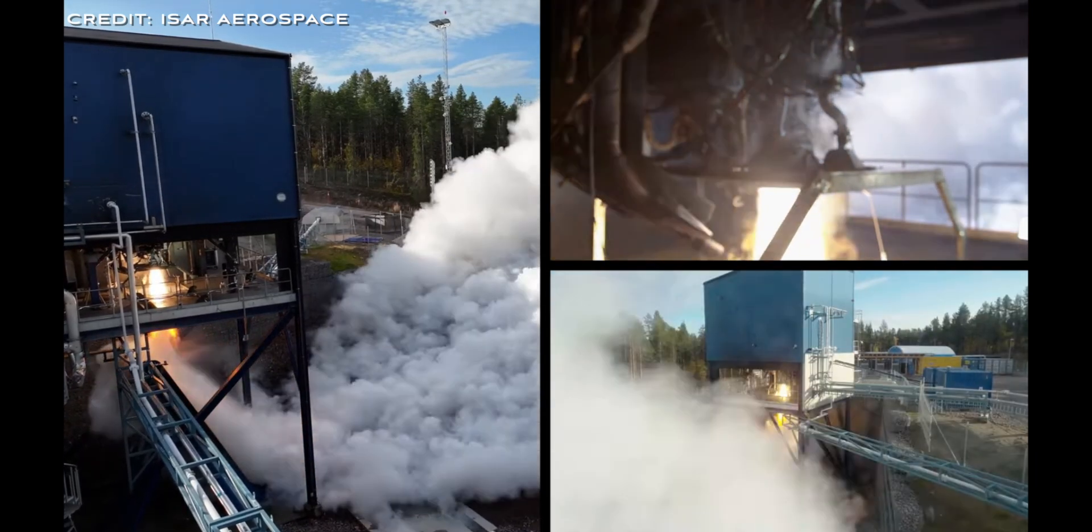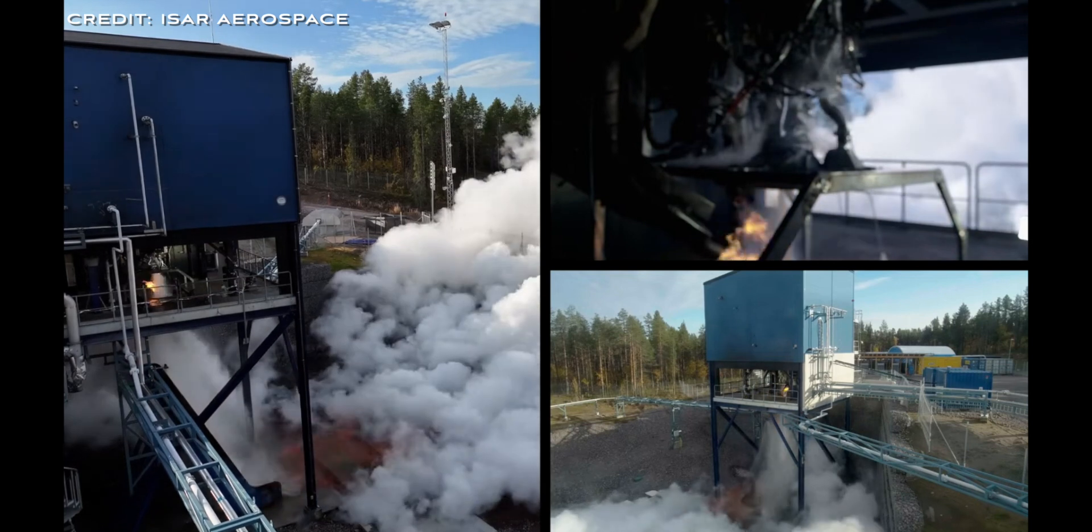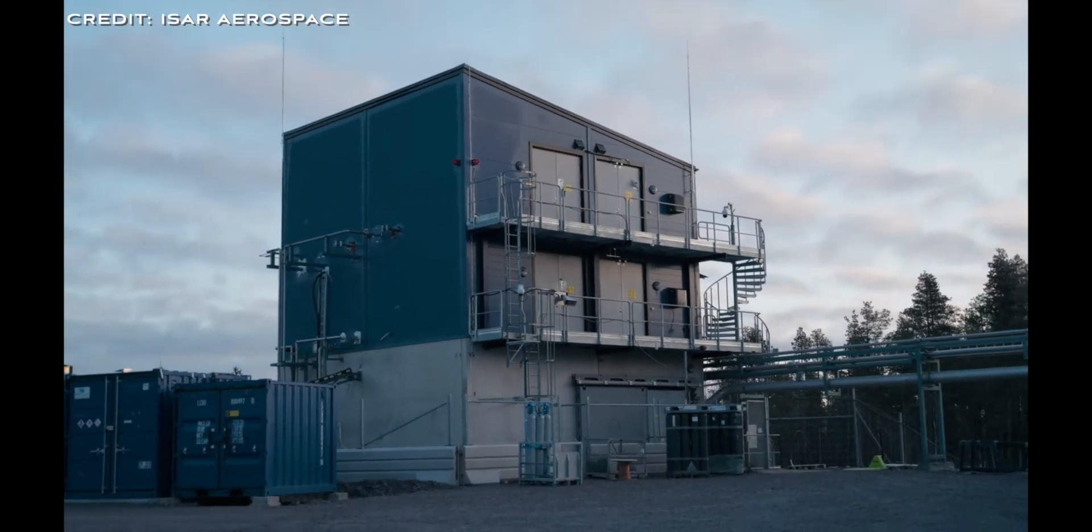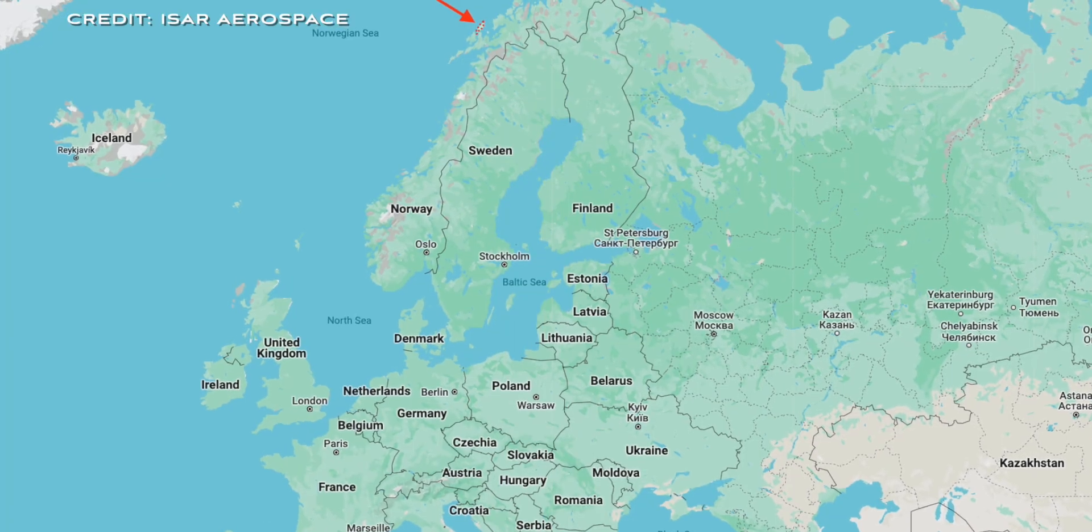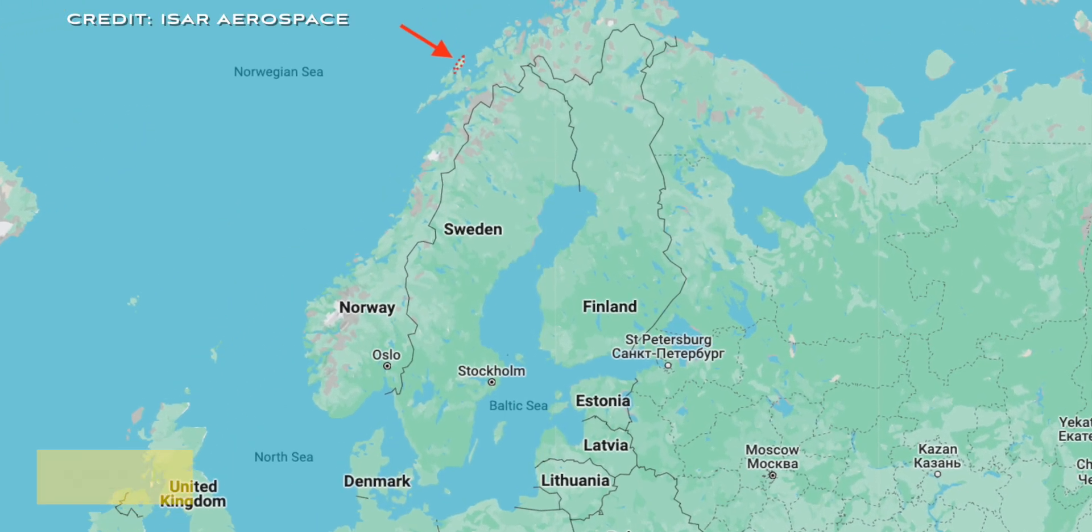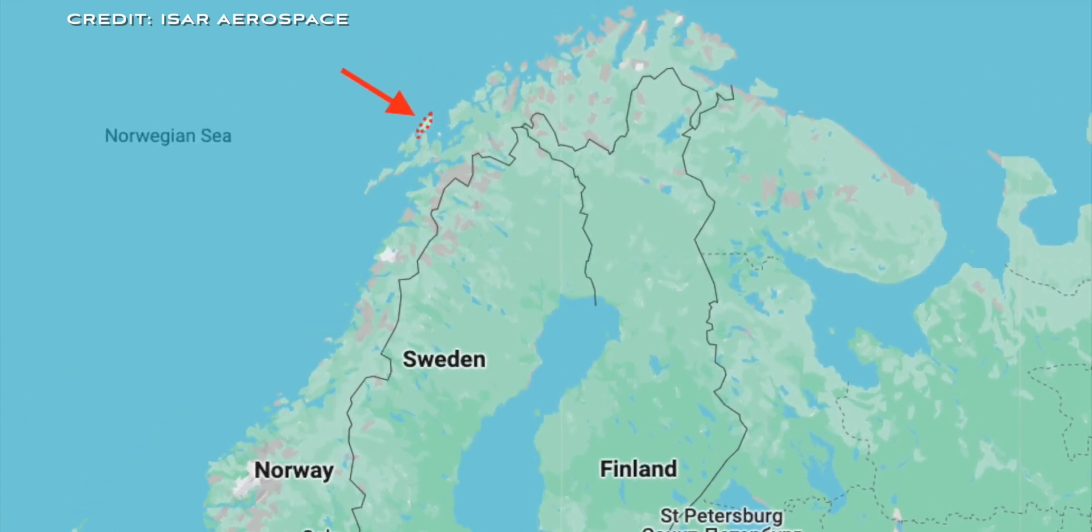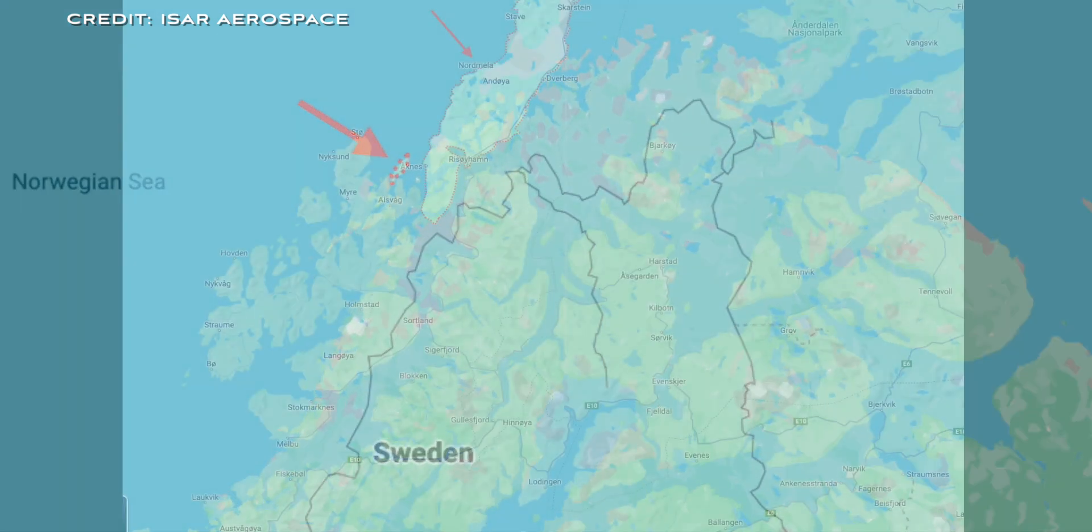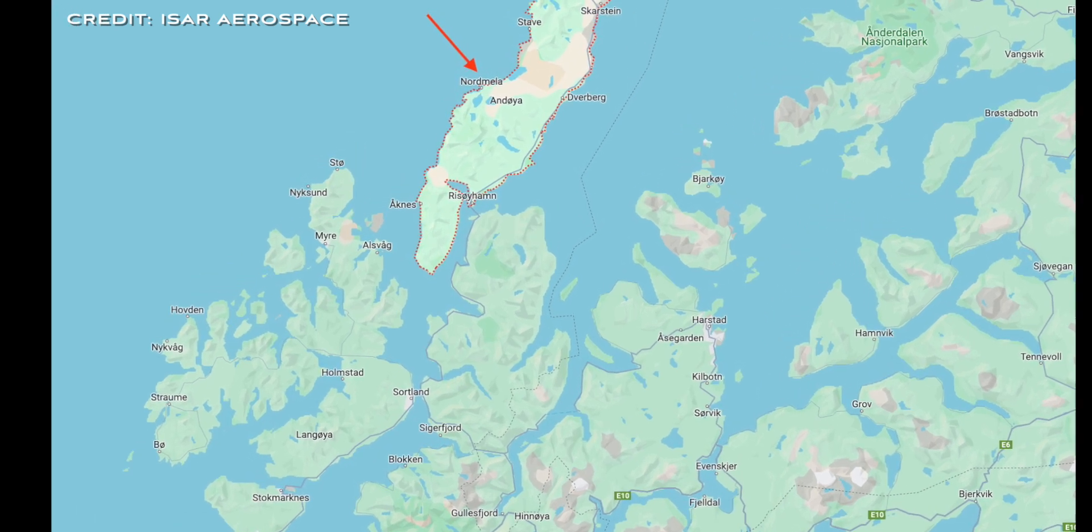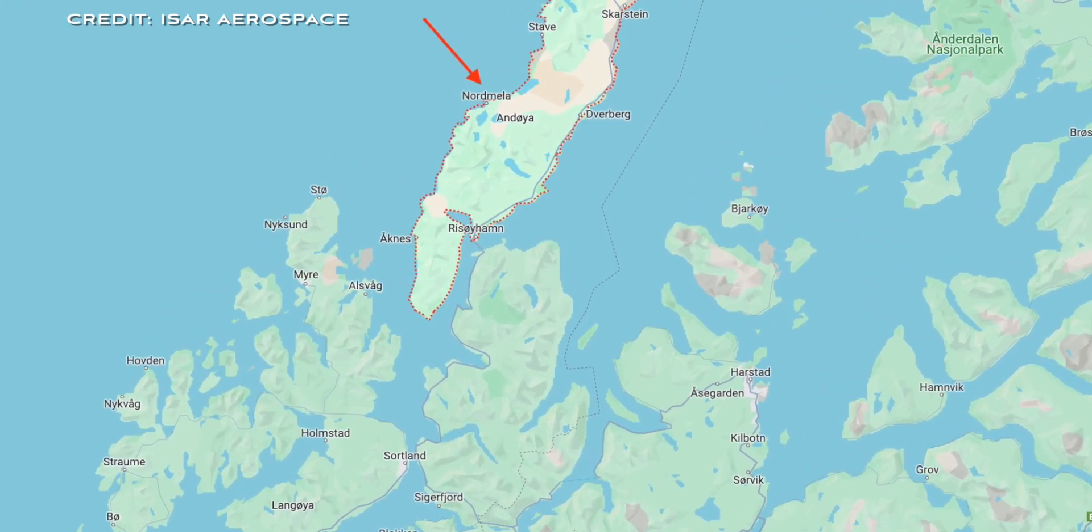Let's look at where they will be launching from. This can be an important factor for potential customers and also affects the types of orbits that are achievable. ISAR Aerospace has an exclusive launch pad in Andøya, Norway. Given its location far north on the coastline, Andøya offers launch inclinations ranging from 87.4 to 108 degrees. These are favorable for sun-synchronous as well as polar orbits.